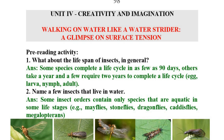What about the lifespan of insects in general? Common insects have varying lifespans. Some insects complete their life cycle in 90 days, while others complete it in 2 years.